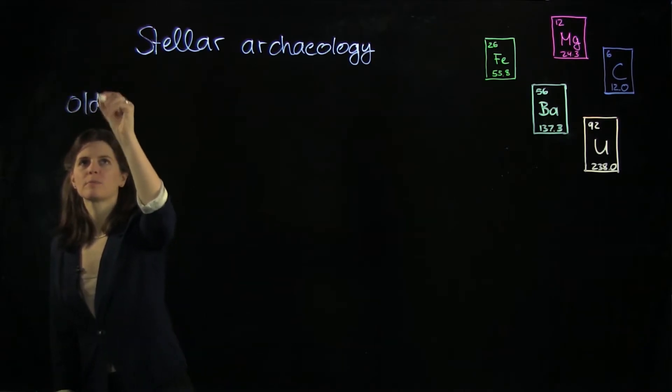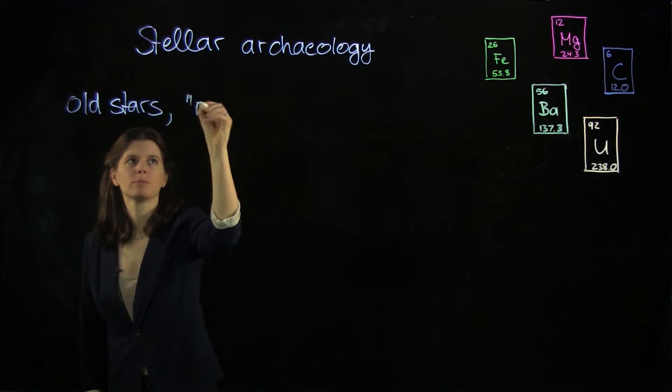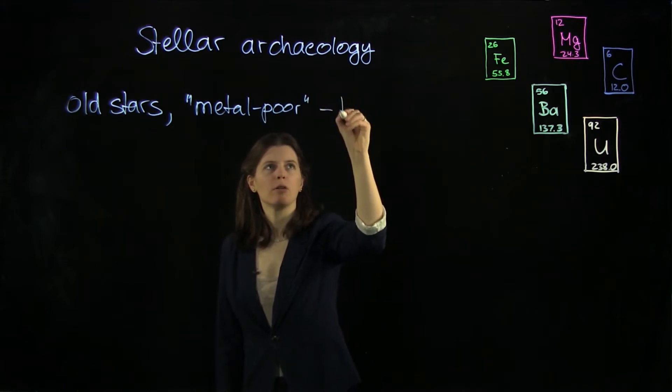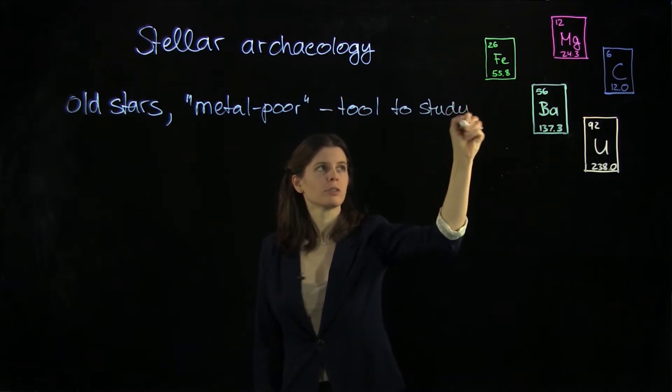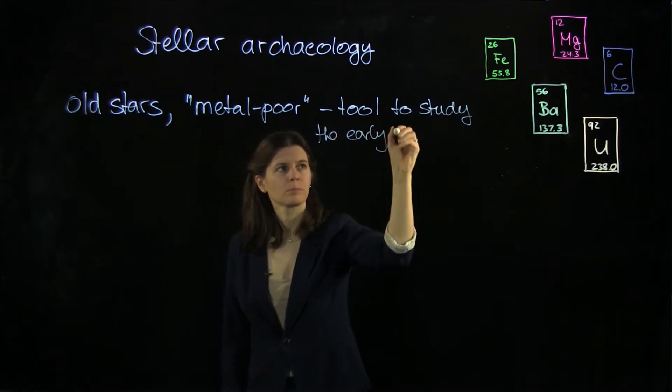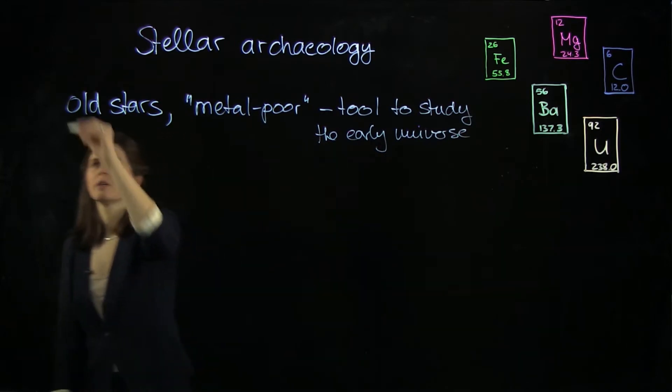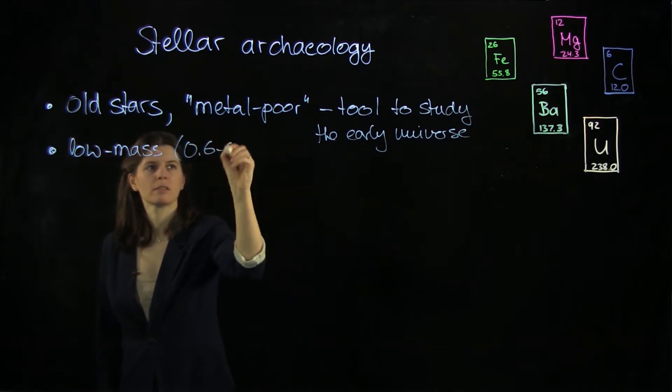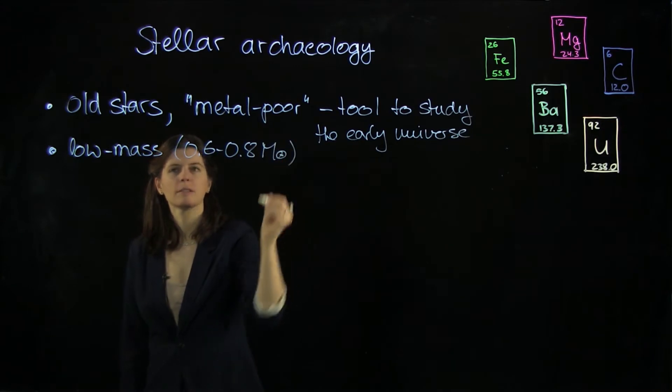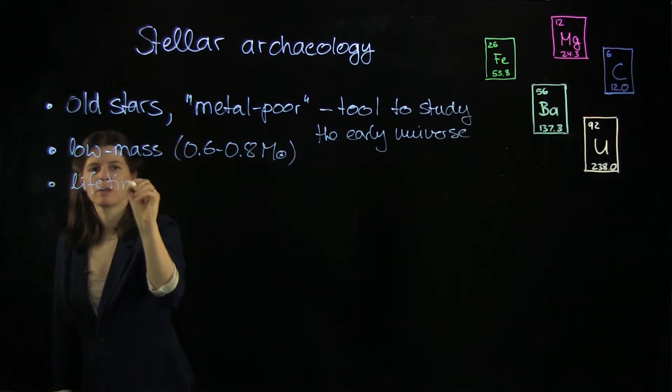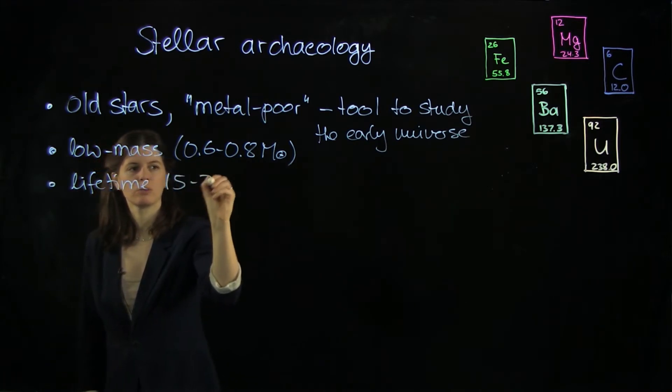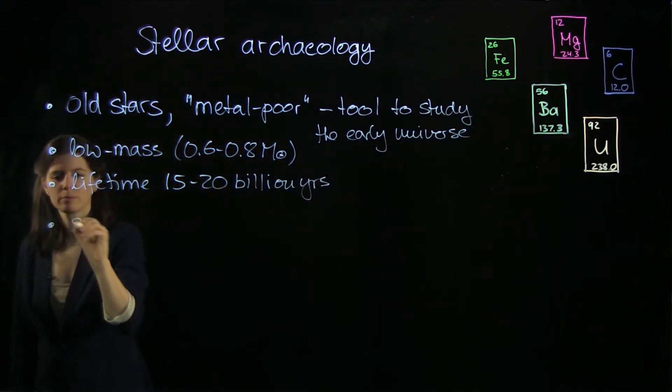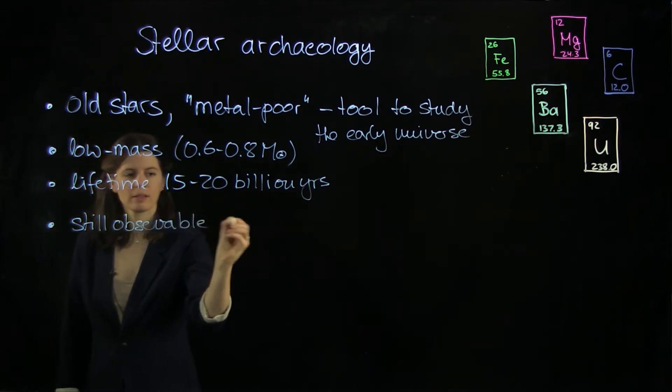So we have old stars and we call them metal-poor and they are our tool to study the early universe. These stars are long-lived so they have a low mass, something like 0.6 to 0.8 solar masses, and that means that they are still observable and that is very lucky for us.